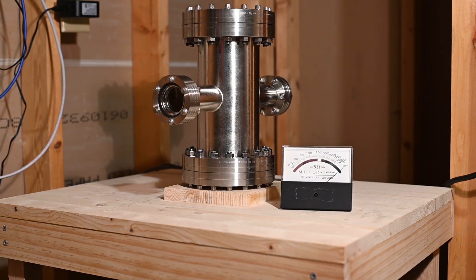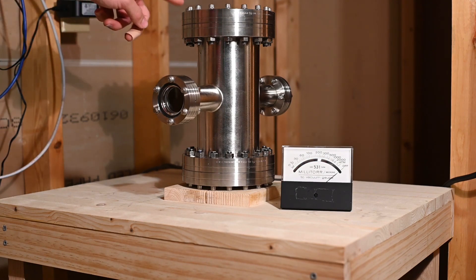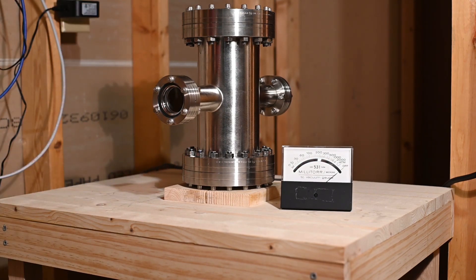Since the last video I have upgraded from a vacuum bell jar to a fully stainless steel chamber. As you can see this chamber has two 6 inch conflat flanges and two 2.75 inch conflat flanges, and on this first 2.75 inch conflat flange I have a viewport which will be great for viewing the fusion reaction in real time.